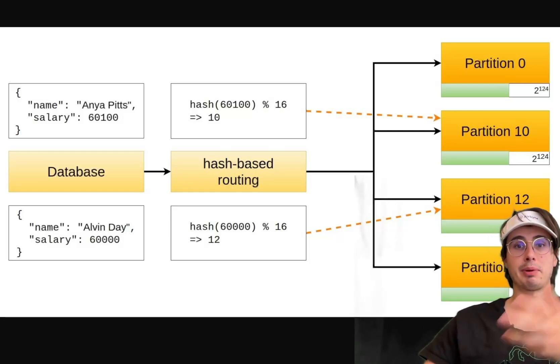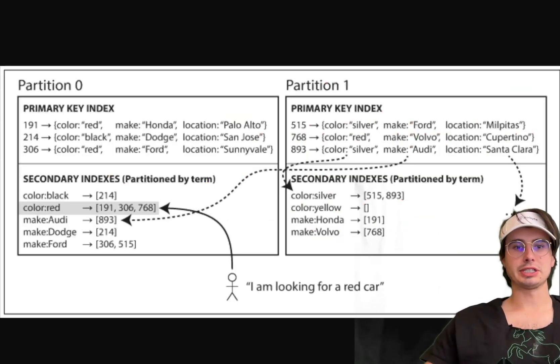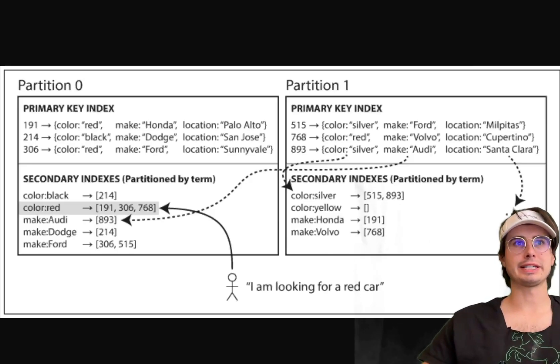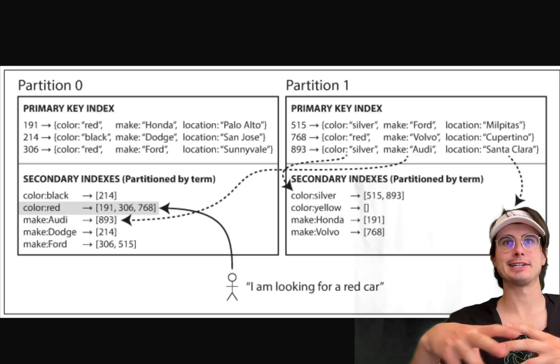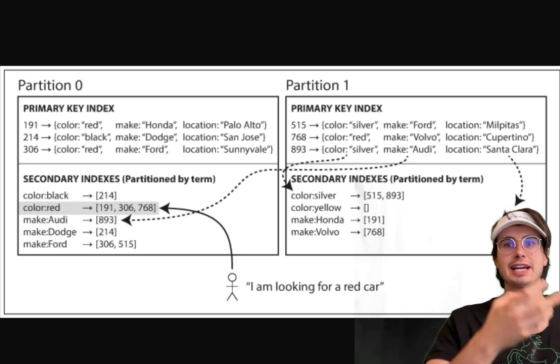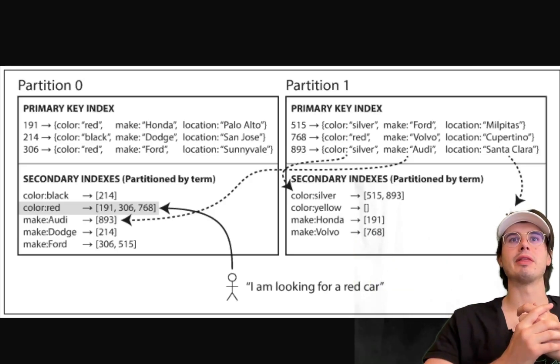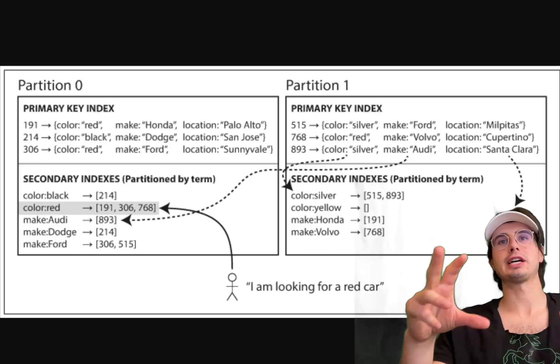Here you can see an example of what partitioning with secondary indexes look like where you have that primary key index but then you also have a secondary index that is used to improve query performance on non-primary key attributes. So essentially a second set of keys like silver, yellow, Honda that allow you to further partition and segment that data.